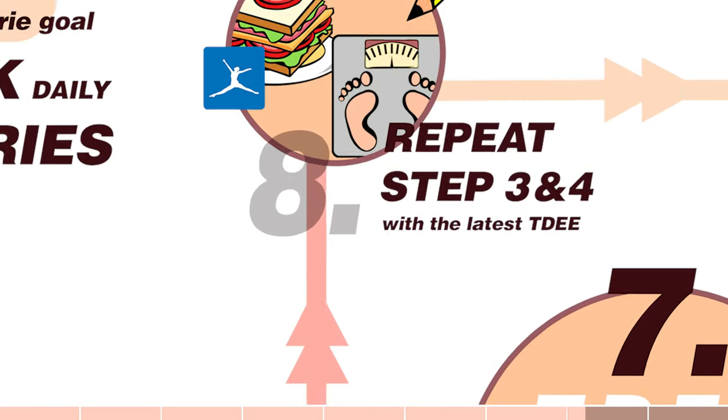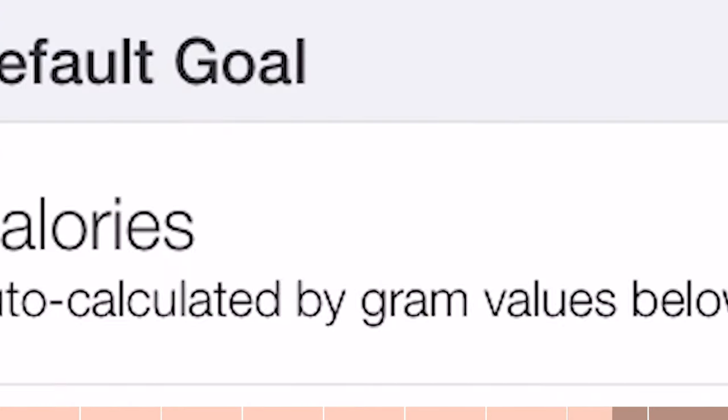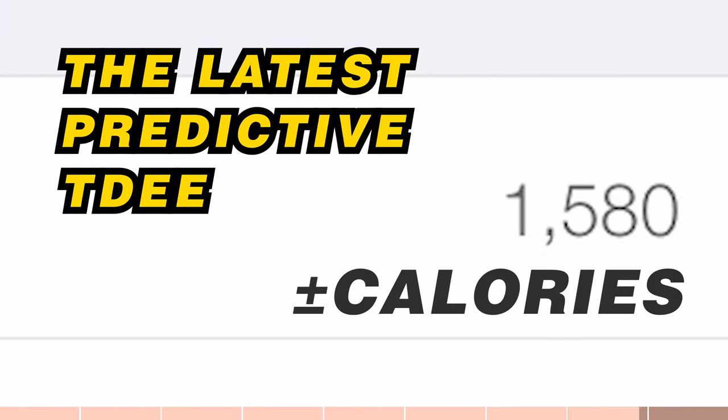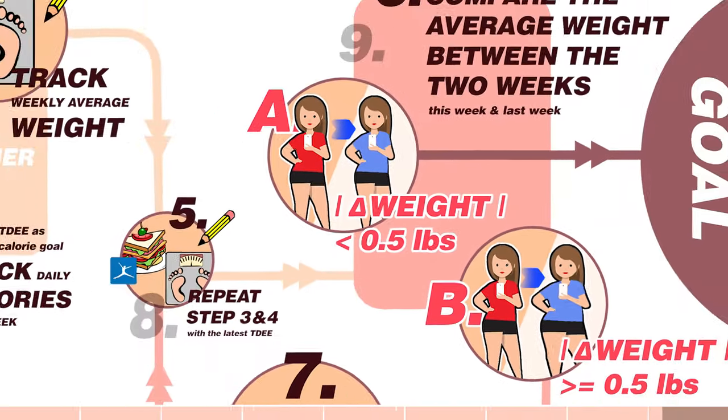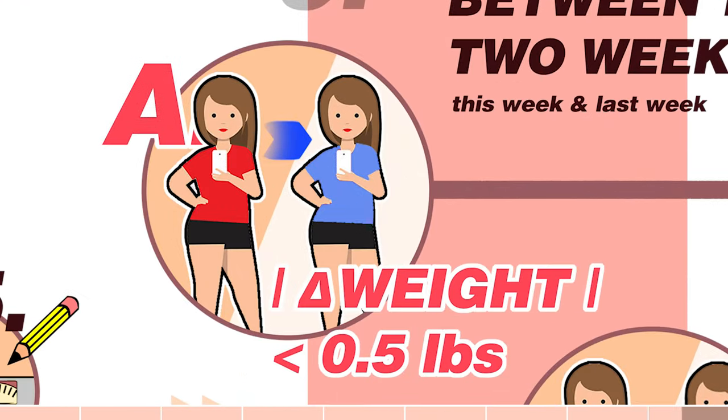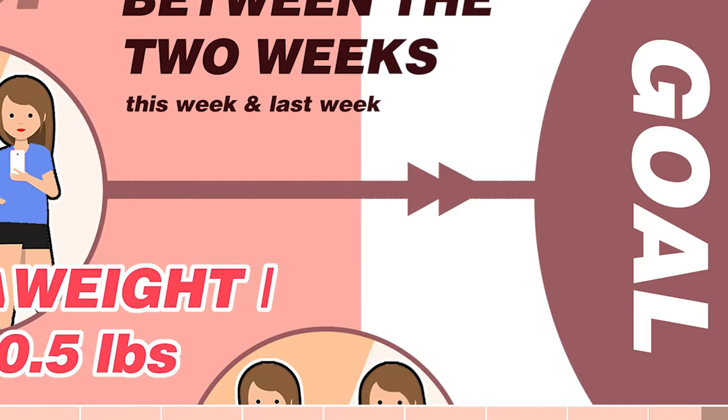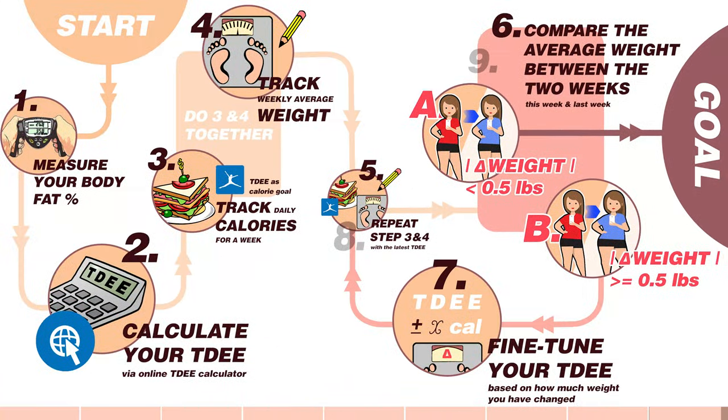Step 8: repeat Step 5 with your latest predictive TDEE. Step 9: repeat Step 6 until you reach Scenario A. As you can see, if you can get a more accurate TDEE from the start through the online TDEE calculators, then it's faster and easier to go through those steps and get to your final, more accurate TDEE result.